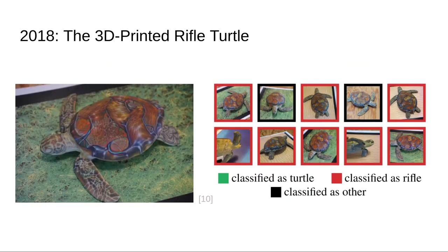And for the name-giver of this talk: the 3D-printed rifle turtle. This is actually a 3D-printed model of a turtle which was modified by an adversarial attack — the texture of the model was created with this technology. Whenever we take a picture from whatever angle we want, it is usually identified as a rifle, or as something else, but almost never as a turtle. Which — I mean, it looks like a rifle, right?